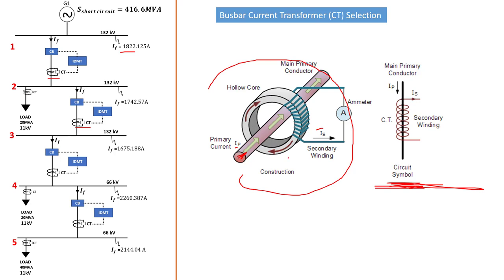According to the process of transforming the current, this is the same process as normal transformers work — a voltage transformer — that works on the phenomenon of electromagnetic induction. According to Ampere's law, together with Maxwell's equations, it says that if a magnetic field is integrated around a closed loop of wire, the value of that integral is equal to the net current enclosed by the loop of the current transformer. This basically means the current produced based on the magnetic field generated by the primary current will be a representation of the current passing through here.